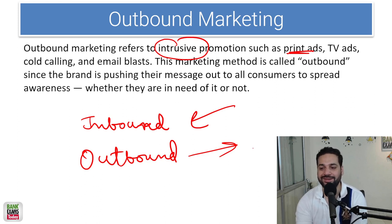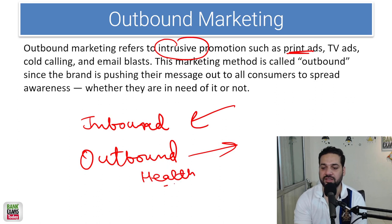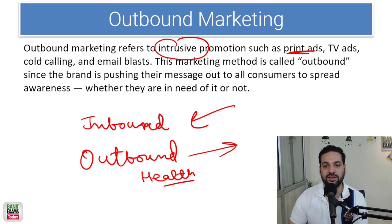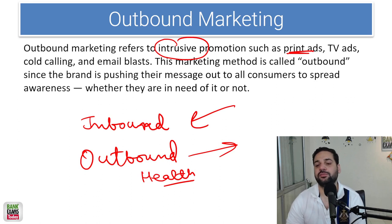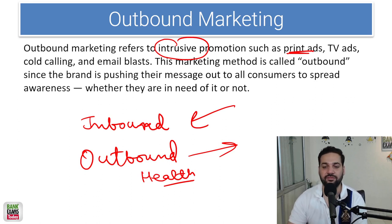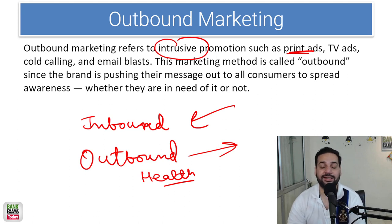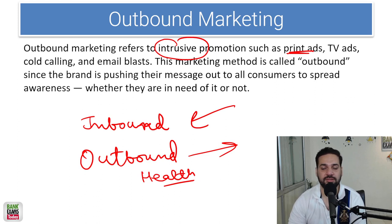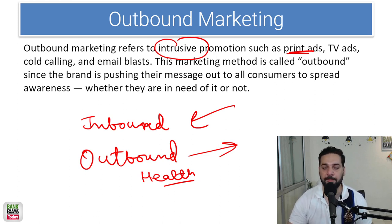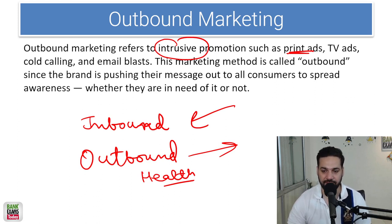A good example is health insurance. If a health insurance agent is coming to your office or your home, that is outbound marketing for them. But in case you are looking for a health insurance plan and you go to Google, you go to PolicyBazaar, you go to ICICI or HDFC Ergo's website, you put your number and then they contact you — that is inbound marketing.